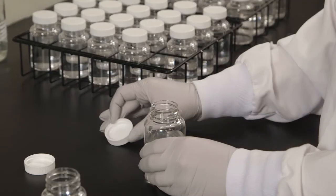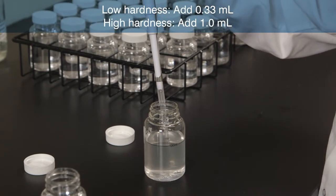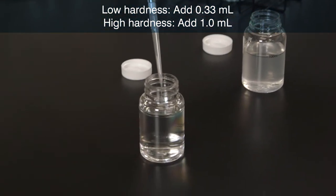Add supplement as follows. For low hardness samples, add 0.33 mL of supplement. For high hardness samples, add 1 mL of supplement.